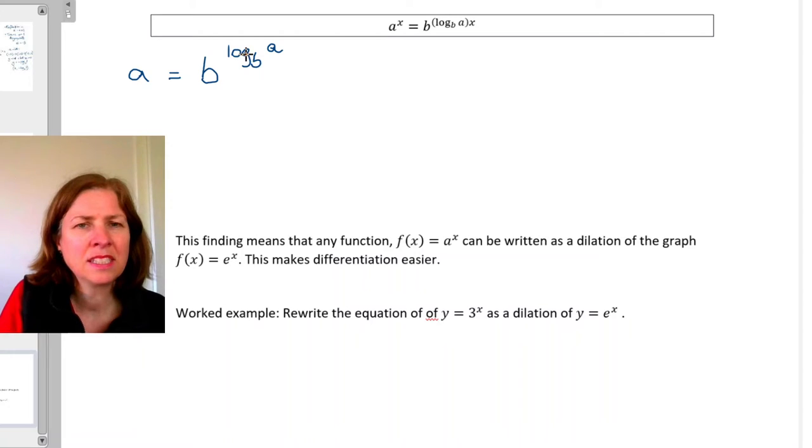Because this is saying log base b to what power will give me an answer of a, and now let's raise b to that power and I will get an answer of a. So that's an inverse operation. They cancel each other out.